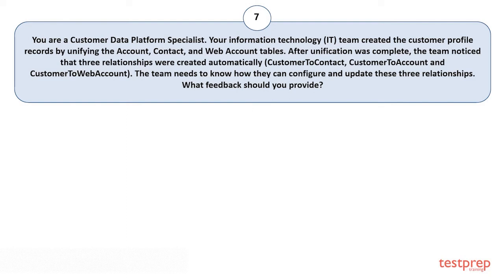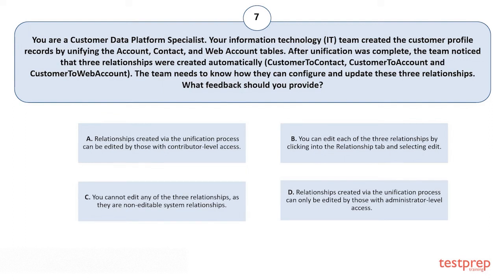Question number seven: You are a Customer Data Platform Specialist. Your information technology team created customer profile records by unifying the Account, Contact, and Web Account tables. After unification, three relationships were created automatically: Customer to Contact, Customer to Account, and Customer to Web Account. The team needs to know how they can configure and update these three relationships. The correct answer is Option C.